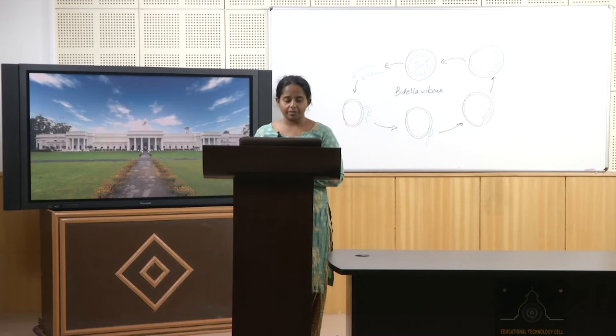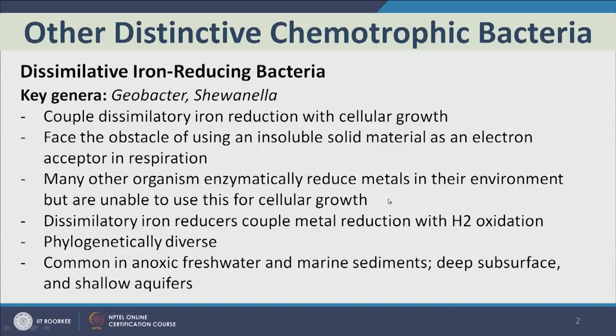Dissimilatory iron reducers couple metal reduction with hydrogen oxidation to bring energy inside the cell. They are phylogenetically very diverse, meaning they are found in different phyla and are genetically diverse, but functionally they are all very similar — under the same functional category but genetically diverse. They are common in anoxic freshwater and marine sediments, deep subsurface and shallow aquifers.